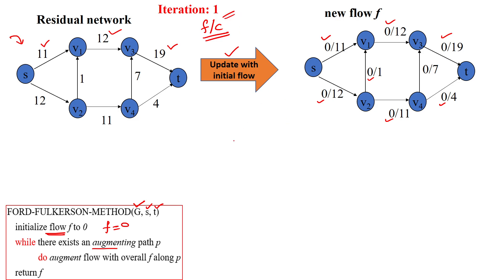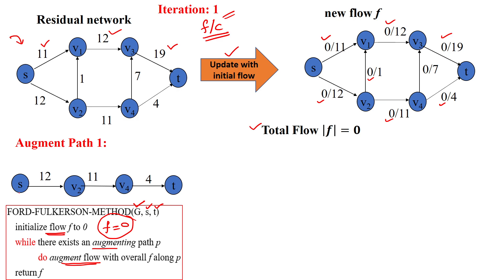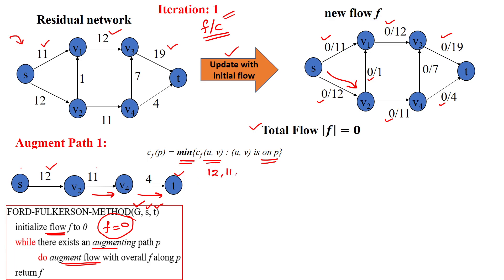In iteration 1, we identify an augmenting path. Currently the flow is 0. We identify the path S to V2, V2 to V4, V4 to T — three edges from S to T. Among the capacity values 12, 11, and 4, we must identify the minimum value, which is 4. We now add this 4 to the overall flow F, so F equals 0 plus 4, giving a total flow of 4.